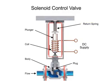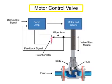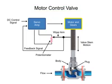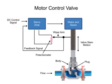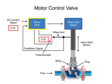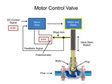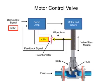Another method for variable valve positioning uses a motor and is referred to as proportional control mode. Using a gear motor attached to the valve stem, a servo amplifier provides a DC control signal that moves the valve to the desired position. Feedback is achieved with a wiper arm attached to the valve stem that sends a signal back to the servo amplifier where the position is monitored. The servo amplifier drives the motor until the control signal is equal to the feedback signal.